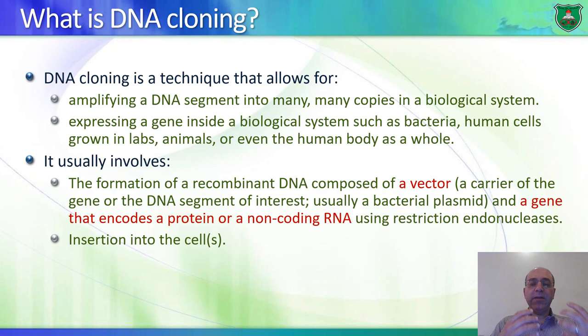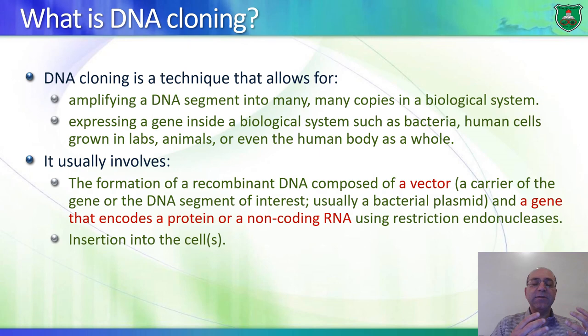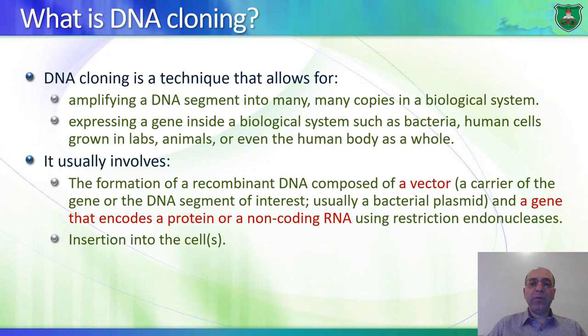Recombinant DNA is basically a piece of DNA made from two or more different sources — for example, human DNA integrated with bacterial DNA. We put this DNA in a vector, which is a carrier of the DNA fragment of interest. An example is a bacterial plasmid. We put it in a bacterial plasmid and use restriction endonucleases.